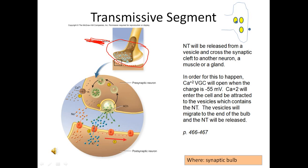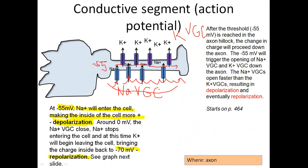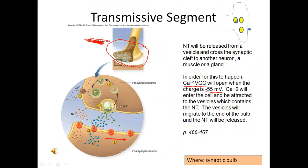Calcium voltage-gated channels are going to open when the negative 55 charge travels all the way down to the synaptic bulb. That's the signal for the calcium voltage-gated channels to open, allowing calcium to enter the cell.